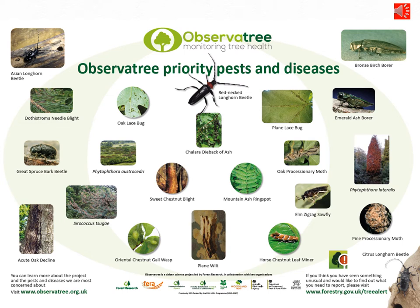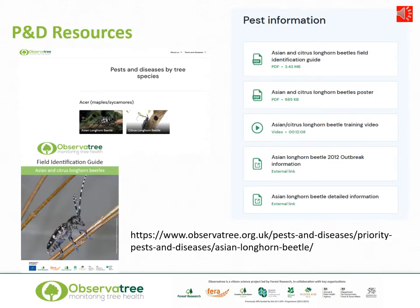Some of them have been recently introduced and spread, like ash dieback, but some of them are still yet to arrive in this country, like emerald ash borer. On the Observatory website you will find a large number of resources about these different priority pests and pathogens — field guides, posters, training videos, information about outbreaks and links to other external resources. They're all freely available.